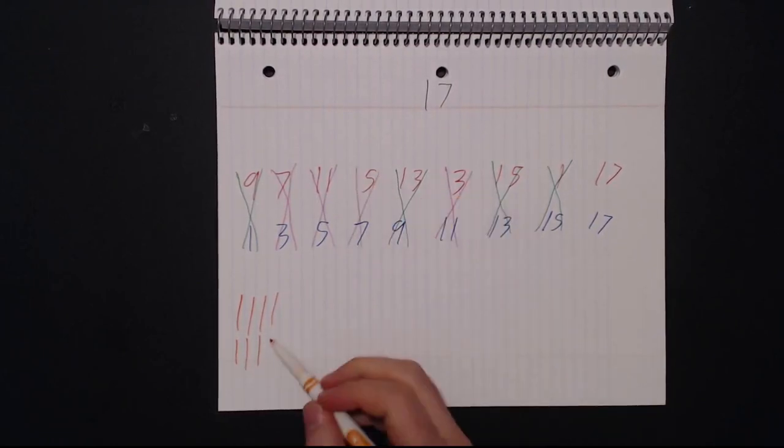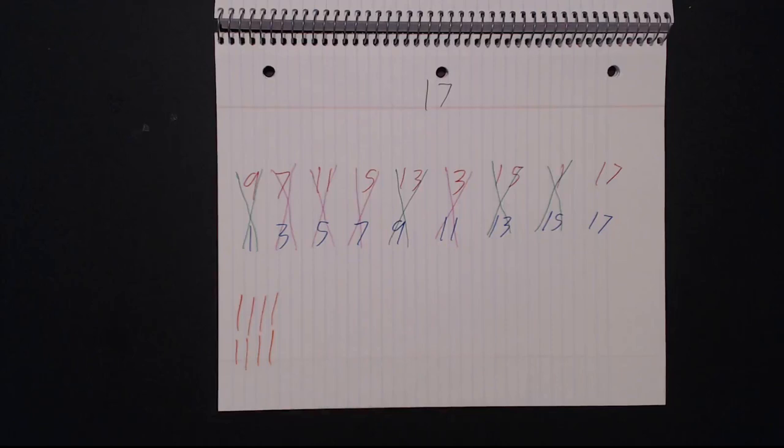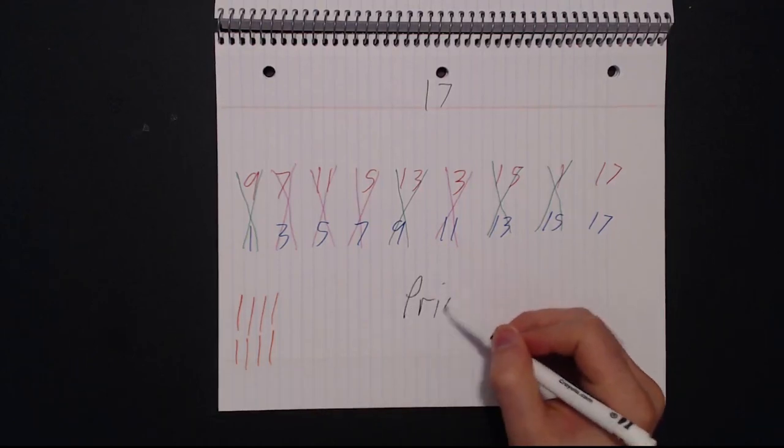Continue on like you've done before. Now that we've run out of columns to remove, let's look at the tick marks. Notice that our two rows of tick marks are the same. That means that this number is prime.